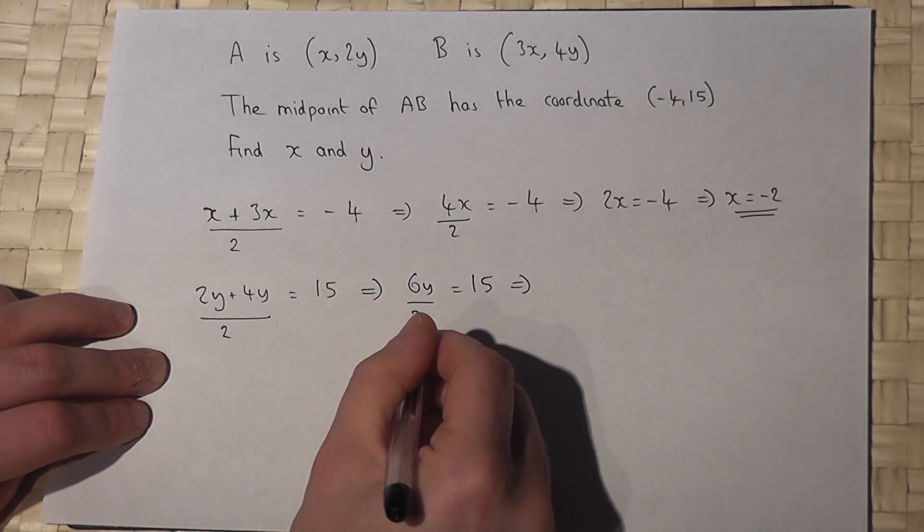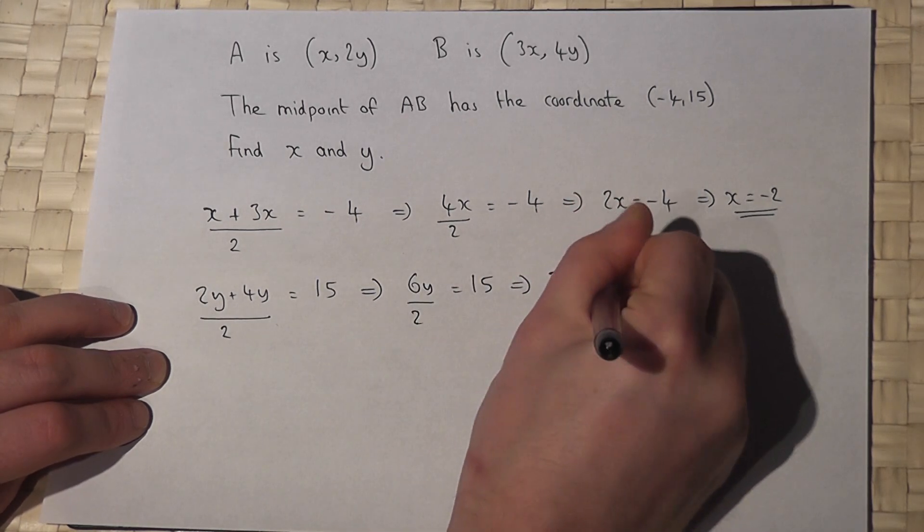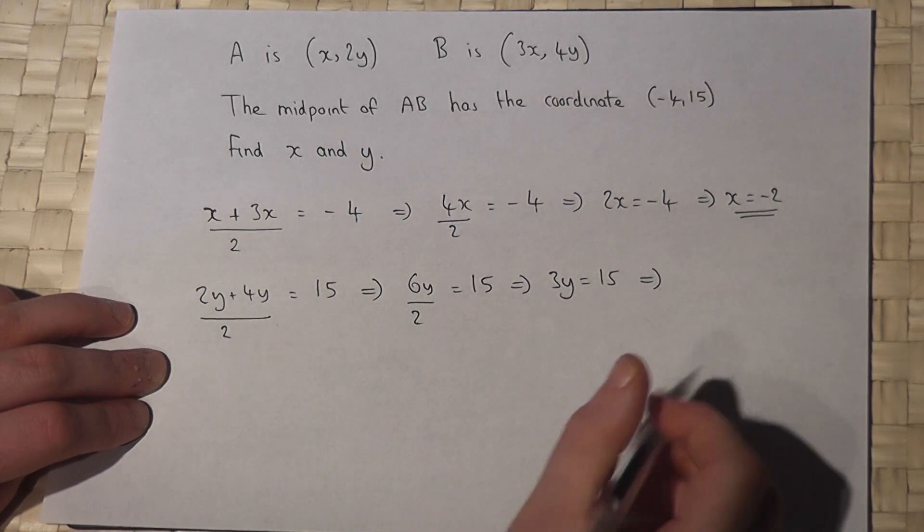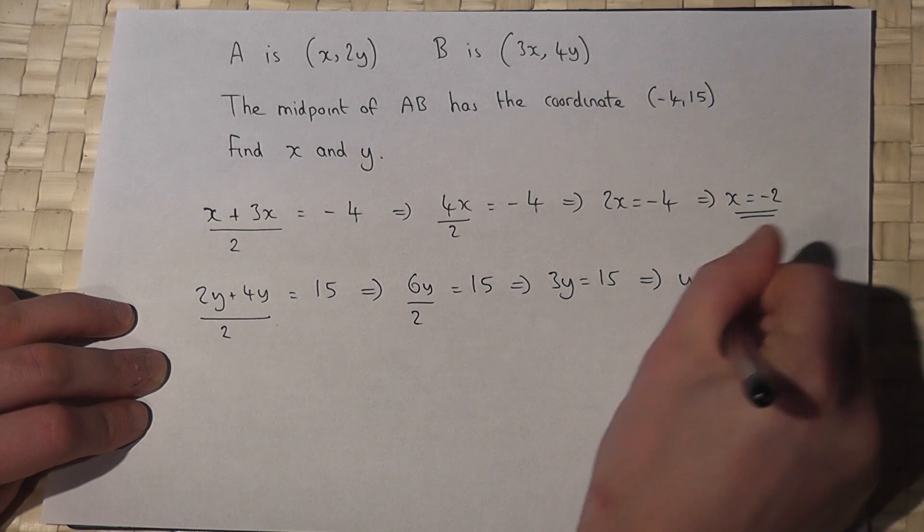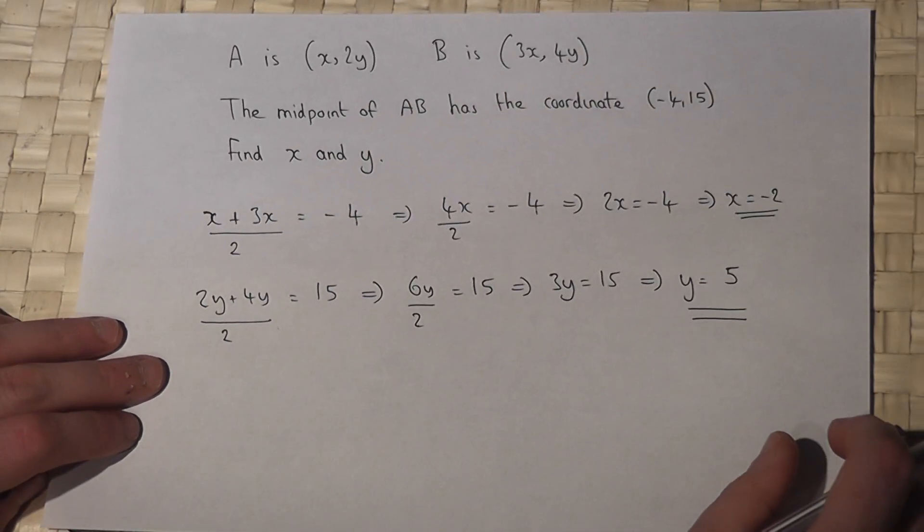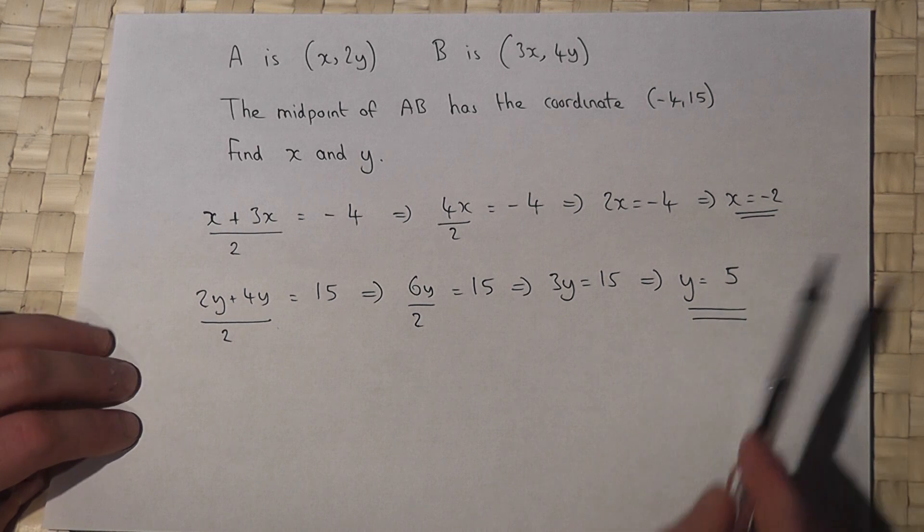6 divided by 2 is 3, so 3y equals 15. So to find y, I divide by 3, so y equals 15 over 3, which just equals 5. So x has a value of minus 2, y has a value of 5.